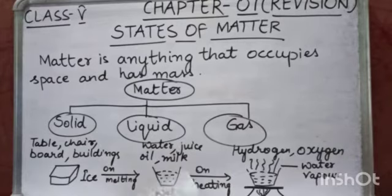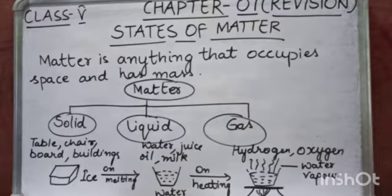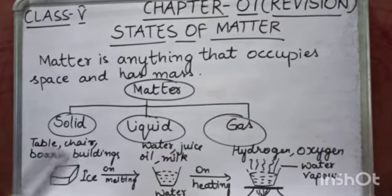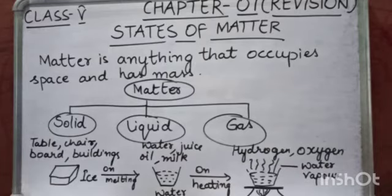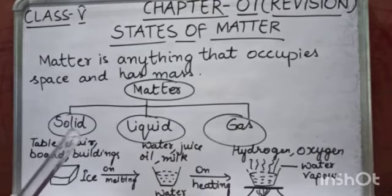Your second term examination will start from 14th of December, and your syllabus will be from 15th assignment to 25th assignment. That means you have to prepare chapter number 3 — the nervous system and sense organs; chapter number 5 — growth and reproduction in plants; chapter number 7 — states of matter; and chapter number 10 — light and shadow.